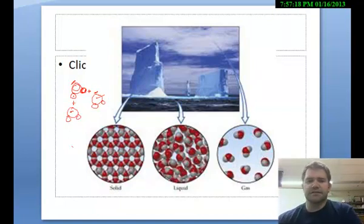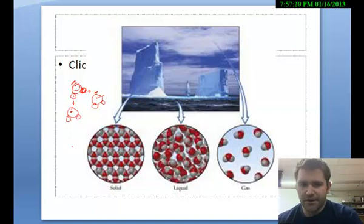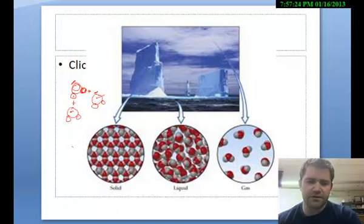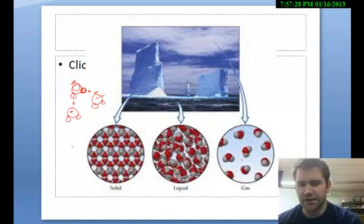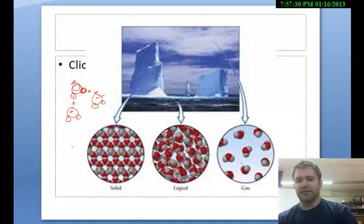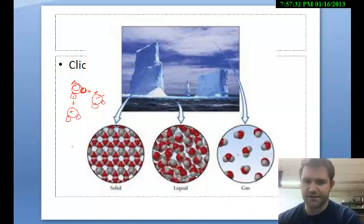So ice is slightly less dense than water. In a liquid, though, we break those bonds and they start moving around each other — they're less orderly, so they're a little closer together. Then as it boils we form a gas, and the gas is much less dense than either of the other two.